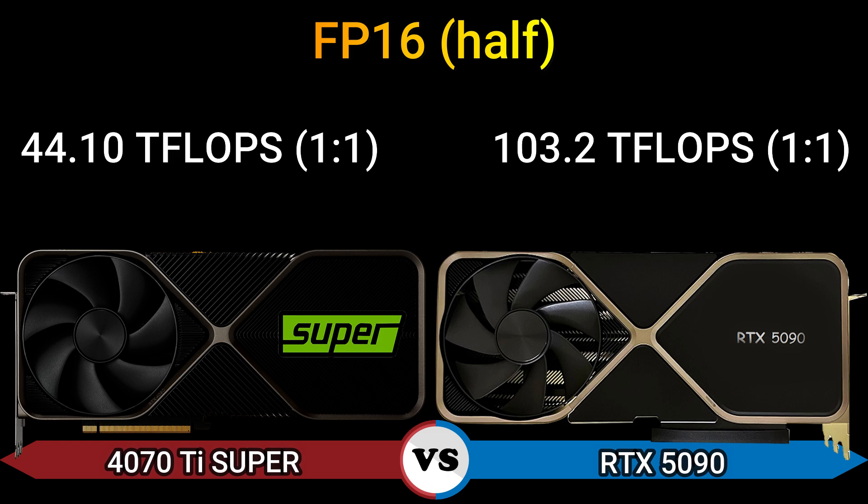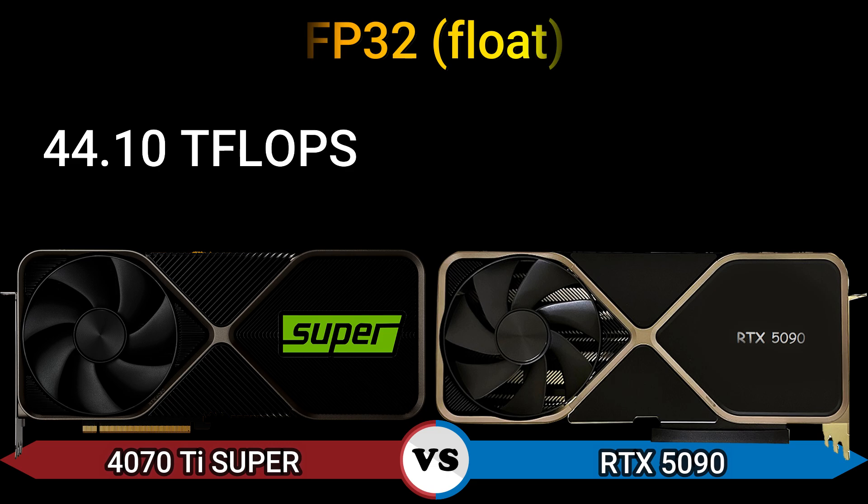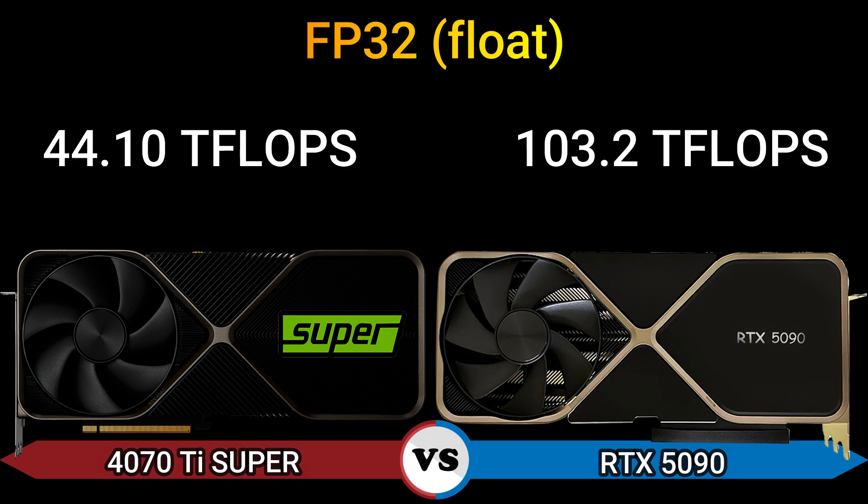FP16 half: 44.10 TFLOPS at 1:1 ratio and 103.2 TFLOPS at 1:1 ratio. FP32 float: 44.10 TFLOPS and 103.2 TFLOPS.